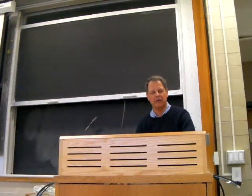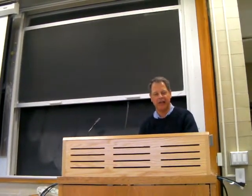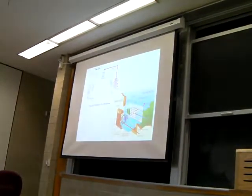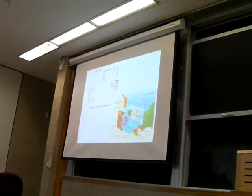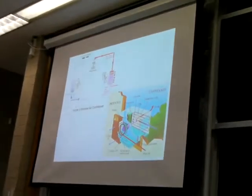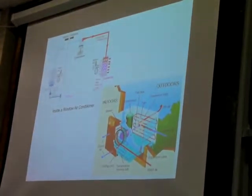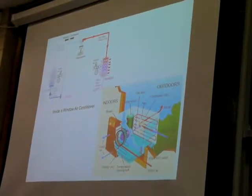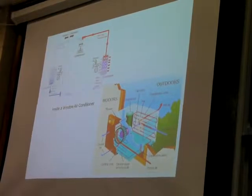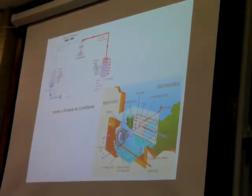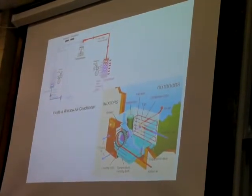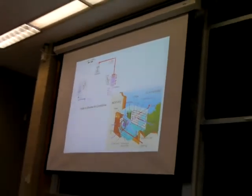Let's start here. The refrigerant is a gas — a cool, low-pressure gas — which is sucked into a compressor. Here we have a compressor with a piston, a crankshaft, and valves, and it's compressing this up to a high pressure. As it is compressed to a high pressure, it becomes hot.